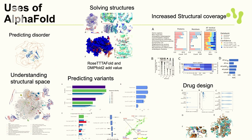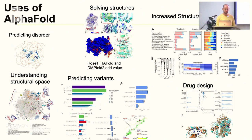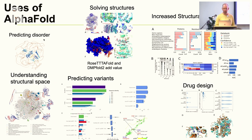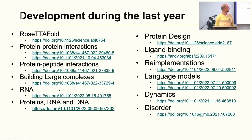AlphaFold2 was released in summer 2021 — it was the middle of the pandemic and Twitter was full of discussions. Within the first two months, the community showed the models are almost as good as crystal structures and can be used for understanding protein disorders and many other applications. A small sample of papers appeared quickly showing diverse uses.